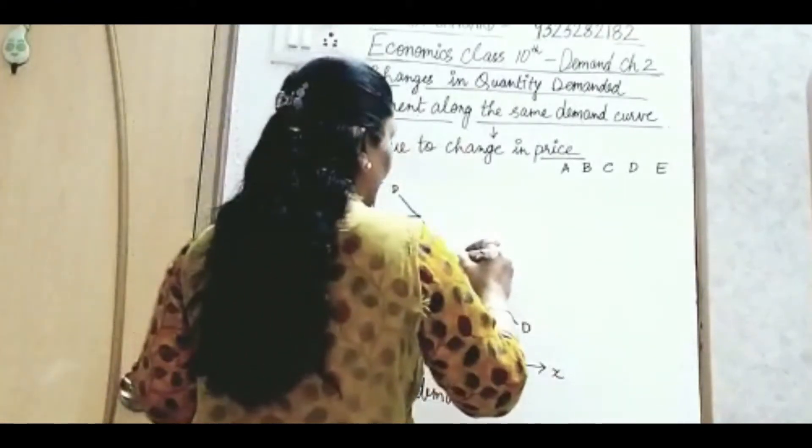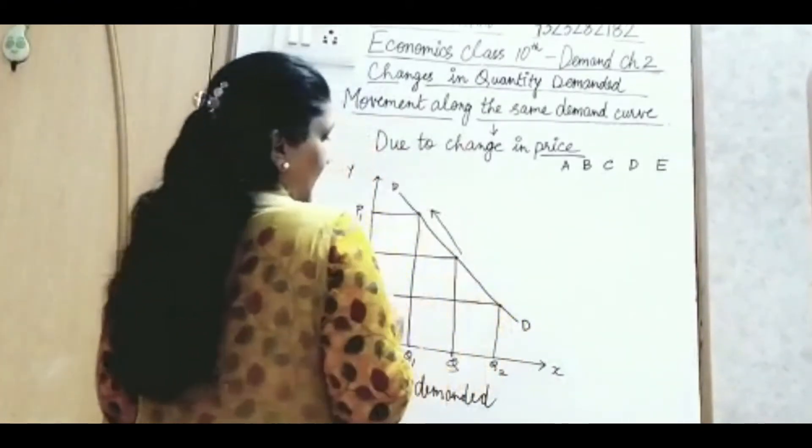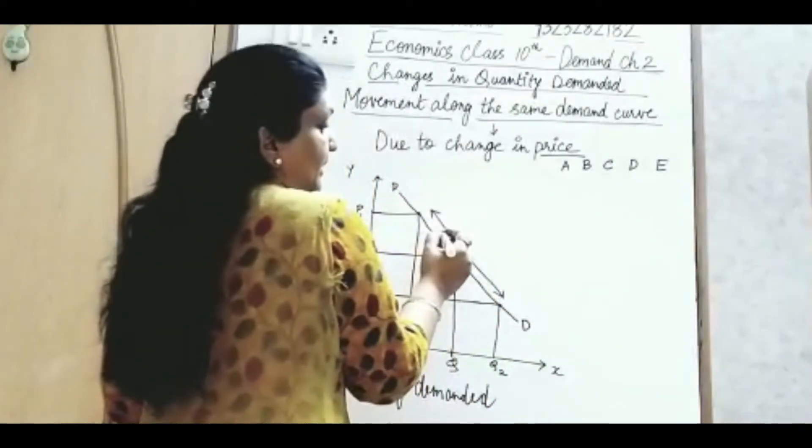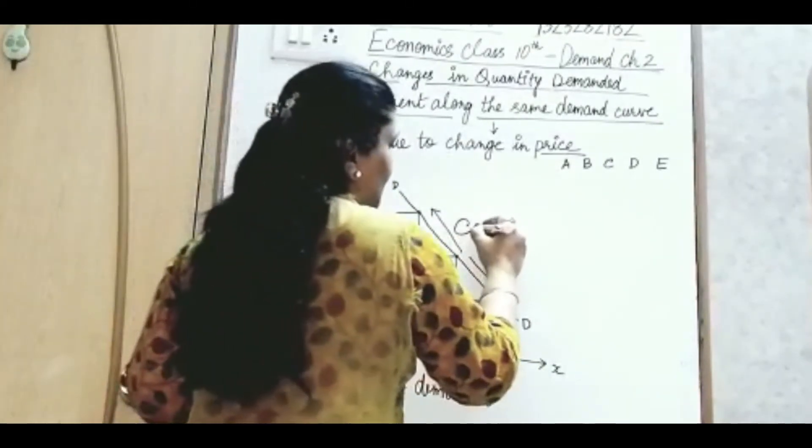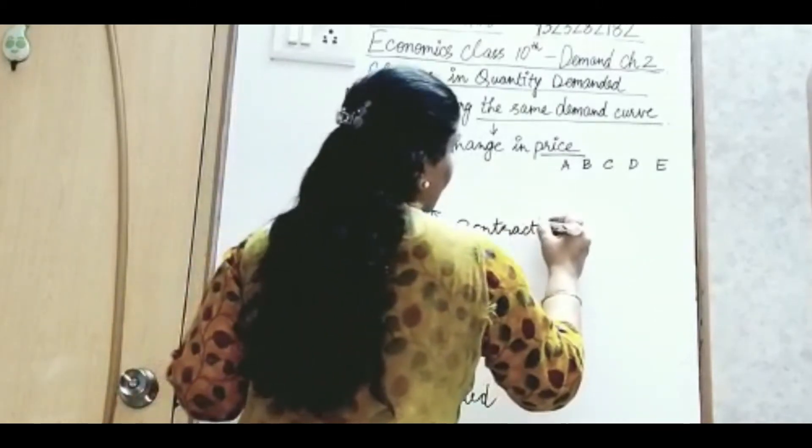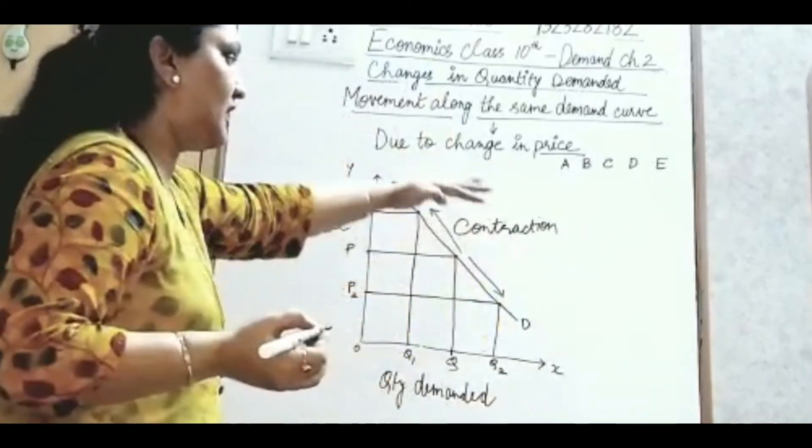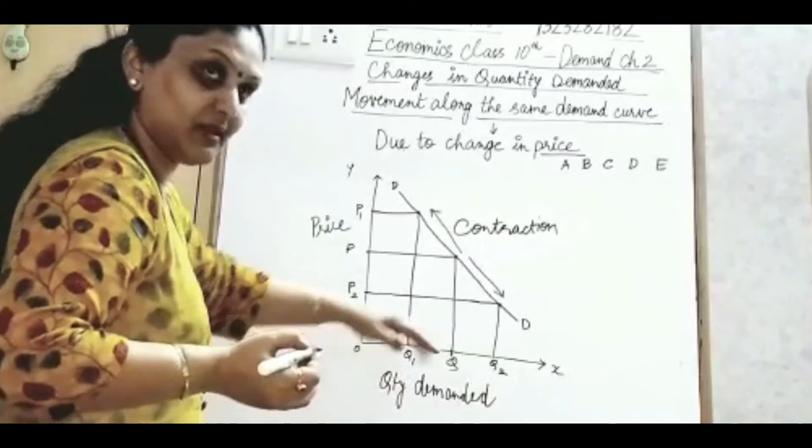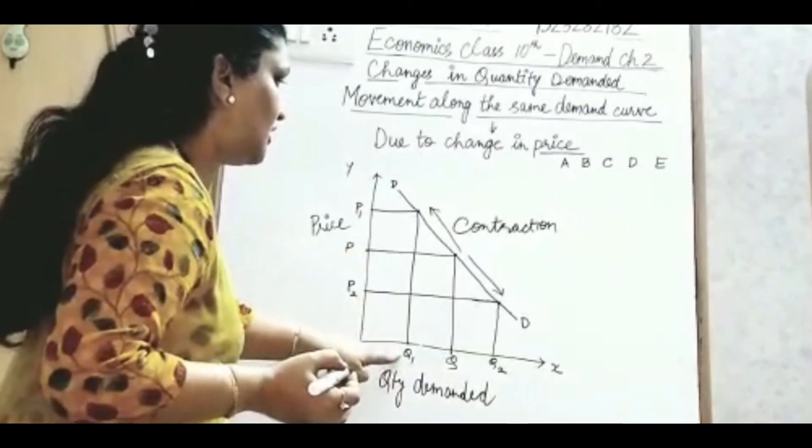So, अभी उपर के side में यदि जाता है और नीचे के side में जाता है, तो उपर के side में क्या बोलते है हम? Contraction. Contraction of what? Contraction of demand. कि demand कम हुई है, इधर से इधर आई है, अंदर की side में. So, contraction of demand.